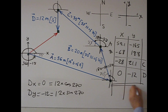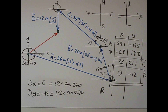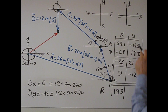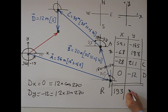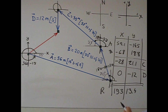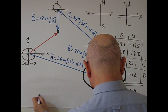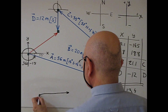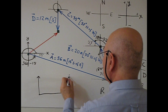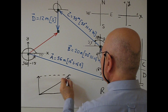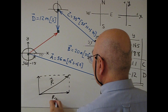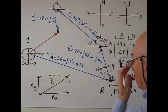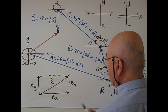When I add all those numbers, I get Rx equal to 19.3, and when I add all the y-components, I get Ry equal to 13.4. Both are positive, so R points into the first quadrant. The rectangular components give Rx equal to 19.3 and Ry equal to 13.4, which is also the other side of the rectangle.